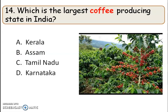Which is the largest coffee producing state in India? India is a basic coffee producer. The right answer is option D, Karnataka. Coffee is generally grown in South India, and Karnataka is the largest basic coffee producing state in India.